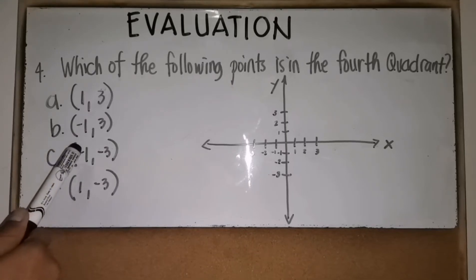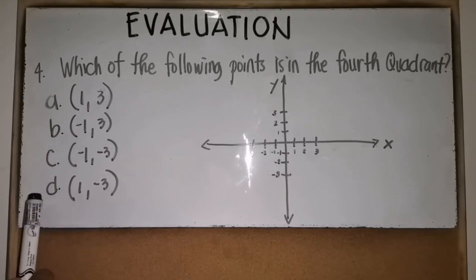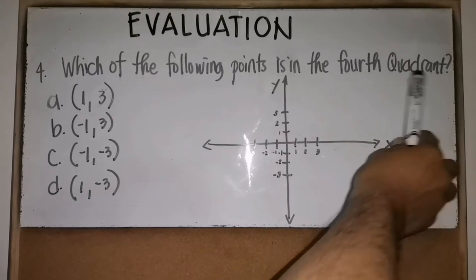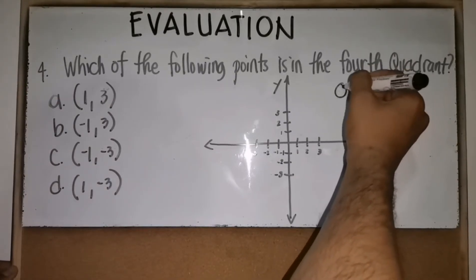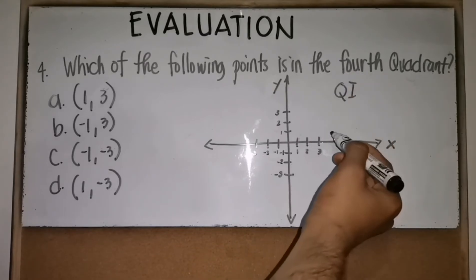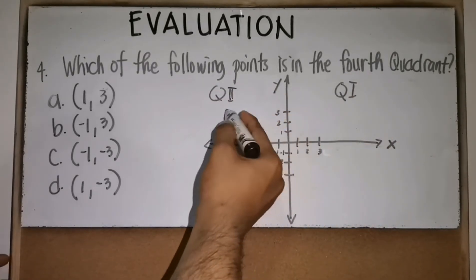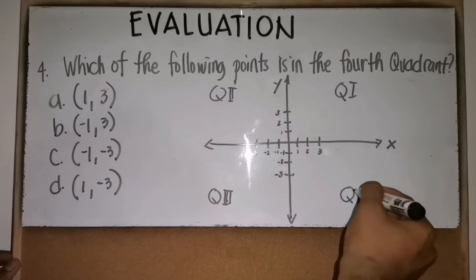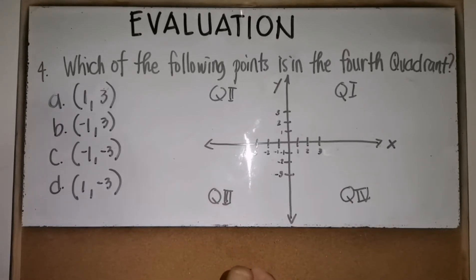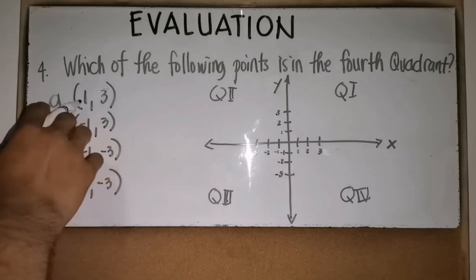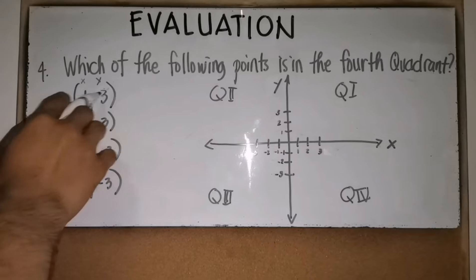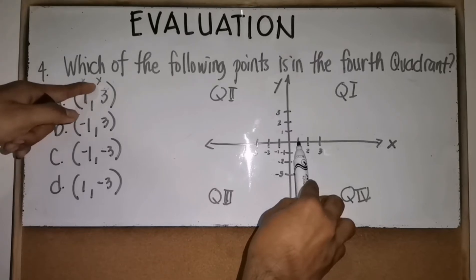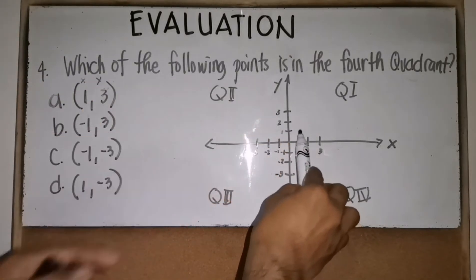Number four: which of the following points is in the fourth quadrant? The choices are: A (1, 3), B (-1, 3), C (-1, -3), and D (1, -3). First, recall that the fourth quadrant is the area where x is positive and y is negative. Plotting point A (1, 3): x = 1 positive, y = 3 positive — that places it in the first quadrant.